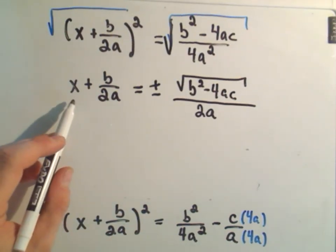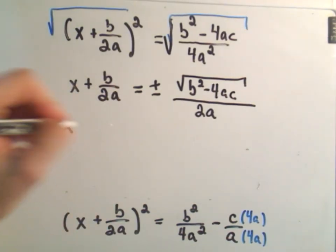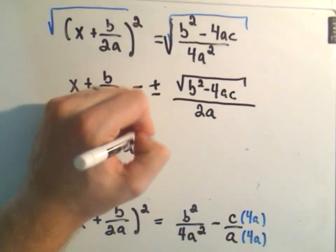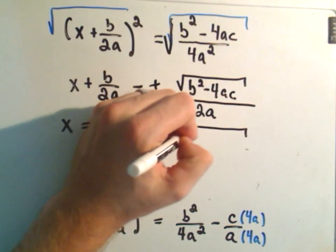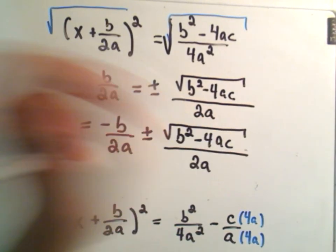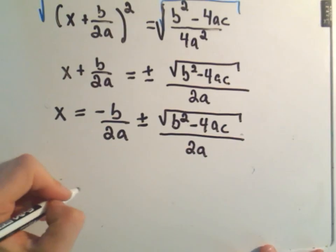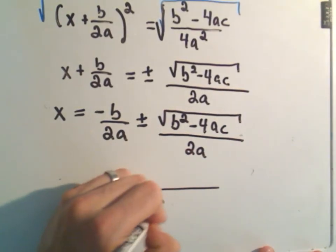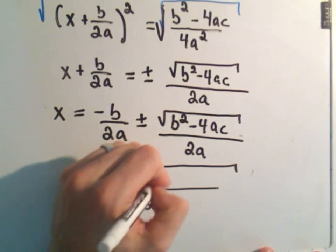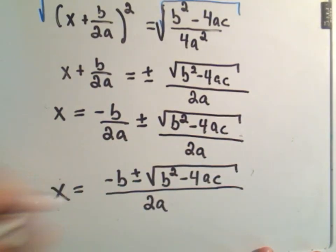The last thing that I need to do now is to move this b over 2a to the other side. So I'll subtract that and get negative b over 2a plus or minus the square root of b squared minus 4ac over 2a. We recognize here that we've got common denominators, so we can actually write this all over 2a. We can write it as negative b plus or minus the square root of b squared minus 4ac all over 2a.